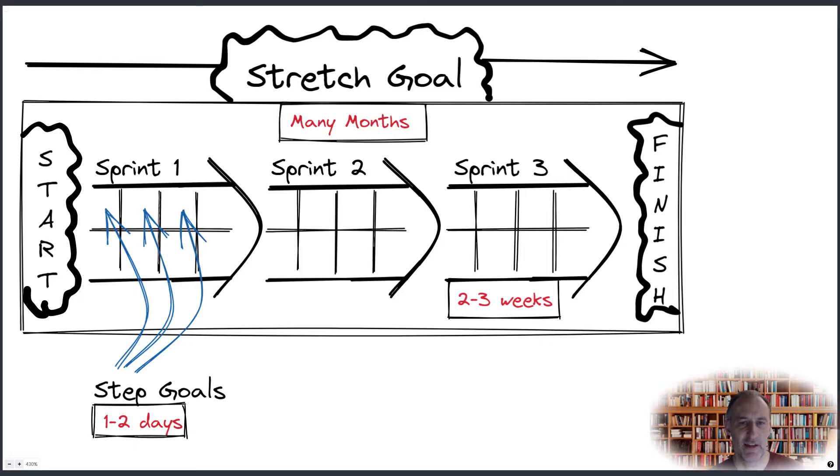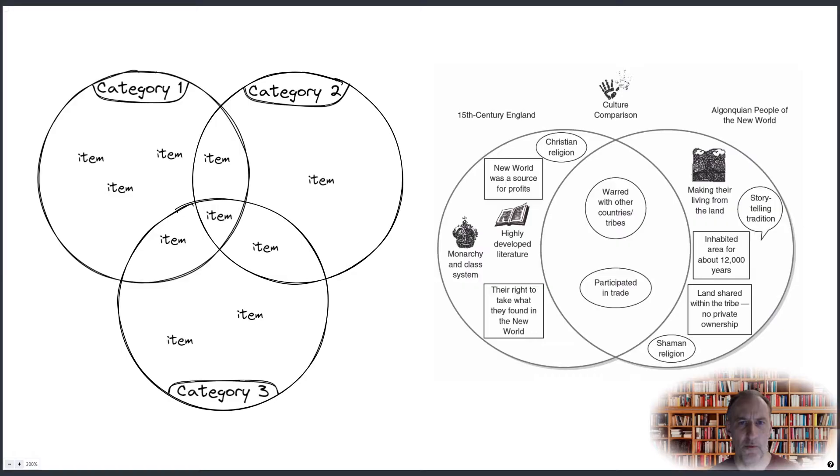Moving on to process specific graphic organizers. Venn diagrams were developed in 1898 by John Venn as a logic tool for showing category structure and to show overlapping categories. Circles represent categories. Items placed at the intersection of circles represent cases that fit both or all of the overlapping categories. Items that are in non-overlapping areas only fit one specific category.